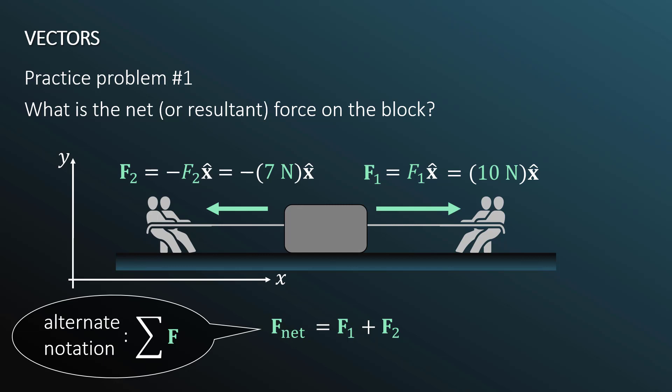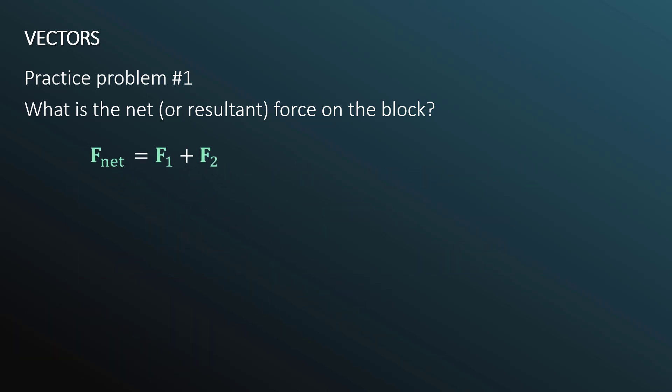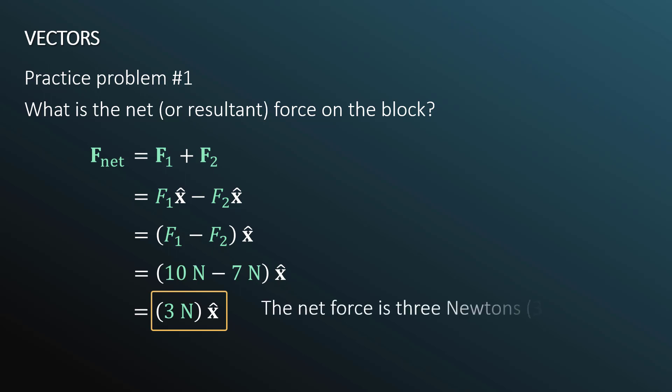So what is the net force? I can write it like this with this boldface f and a subscript of net. An alternate notation is to use the mathematical symbol, this Greek capital sigma, in front of the f, which is used to represent summation. It's the same thing. The sum of the forces, otherwise known as the net force, is equal to f1 plus f2. We know that f1 as a vector is f1 value in the positive x direction, and we're adding that to f2 value in the negative x direction. We have 10 newtons minus 7 newtons. This gives us 3 newtons in the positive x direction. The net force is 3 newtons to the right.